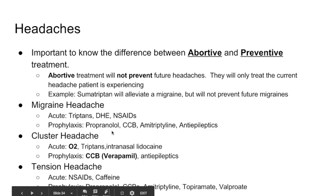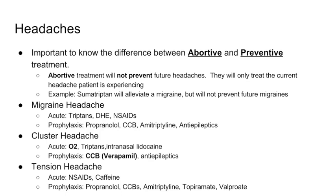Tension headache is the headache that all of us get. Acutely, you can use NSAIDs, Tylenol, or caffeine. For prophylaxis — if they happen frequently — you can use any of the medications used for migraine prophylaxis. That ends our discussion on headaches.